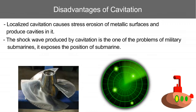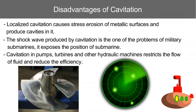Localized cavitation causes stress erosion of metallic surfaces and produces cavities in them. The shockwave produced by cavitation is one of the problems for military submarines, as it exposes their position. Cavitation in pumps, turbines, and other hydraulic machines restricts the flow of fluid and reduces efficiency.